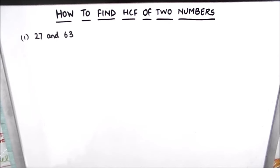Hello everyone. In this video we are going to learn how to find the HCF of two numbers. We will be solving two examples. The first two numbers are 27 and 63. The full form of HCF is Highest Common Factor. As the name suggests, it is the highest common factor between the two numbers.